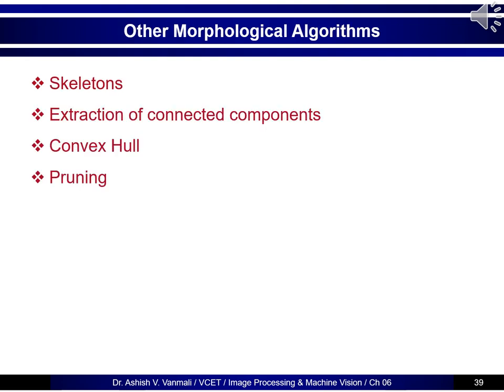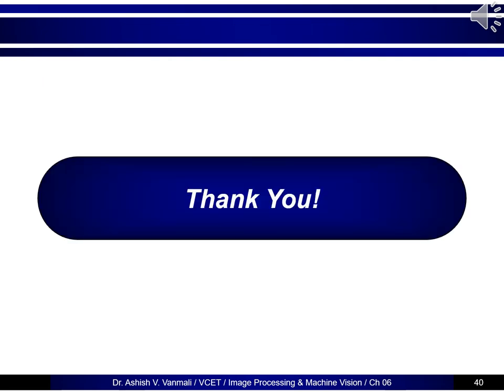In this video we saw four basic morphological algorithms: boundary extraction, region filling, thinning, and thickening. There are many other algorithms as well, such as skeletons, extraction of connected components, convex hulls, and pruning. Students are advised to refer to standard textbooks or other literature to study more about these morphological algorithms. This brings us to the end of the chapter on morphological image processing. If you have any doubts, please write to me at ivpashish@gmail.com.